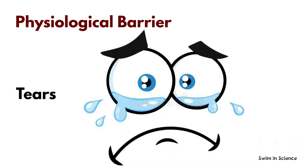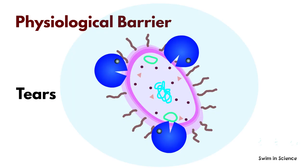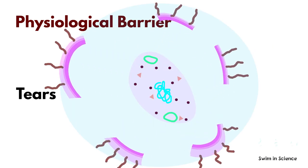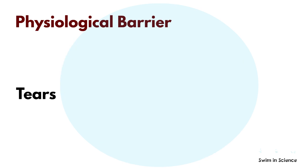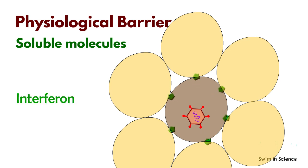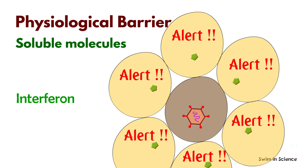We get tears if we are exposed to dust. Tears contain a hydrolytic enzyme called lysozyme, which disrupts the cell wall of many bacteria, leading to the clearance of bacteria from the eyes. Virus-infected cells produce a soluble protein called interferon. Interferon binds to nearby cells and induces a generalized antiviral state.